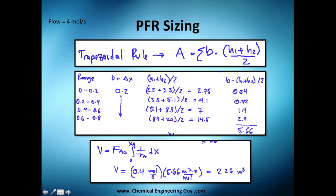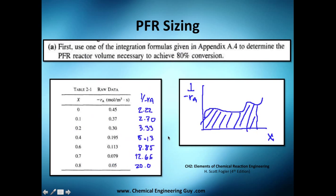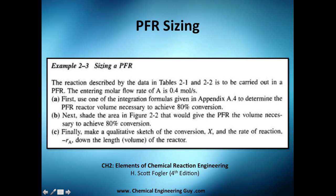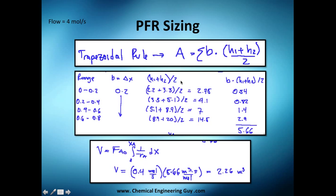That total area is the PFR volume, but calculated per unit mole. Since we're not feeding one mole — we're feeding 0.4 moles per second — we multiply the area by F_A0 = 0.4. The mole units cancel out, and we get a PFR volume of 2.26 cubic meters.